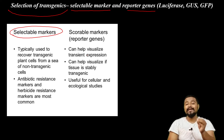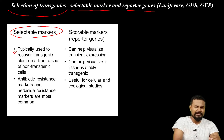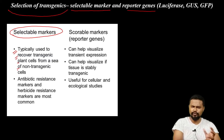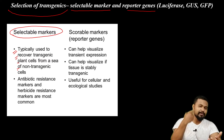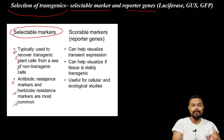Transgenics are selected. Selectable markers are typically used to recover transgenic plant cells from a sea of non-transgenic cells. Antibiotic resistance markers and herbicide resistance markers are the most common.